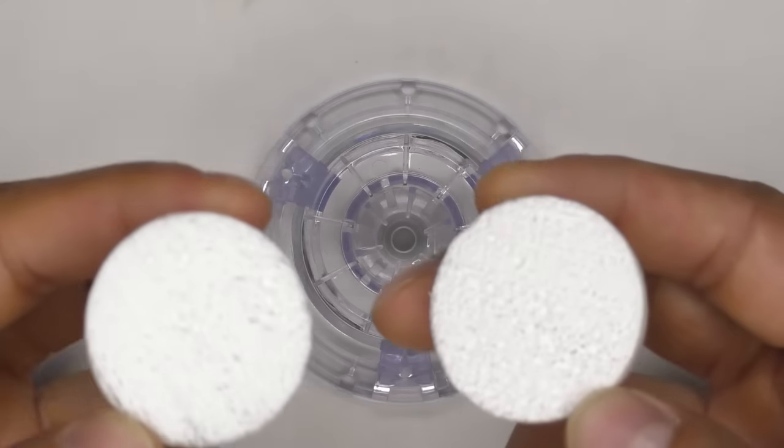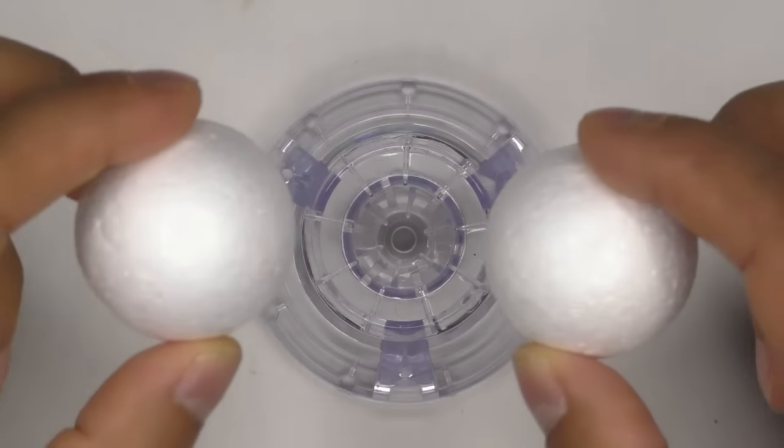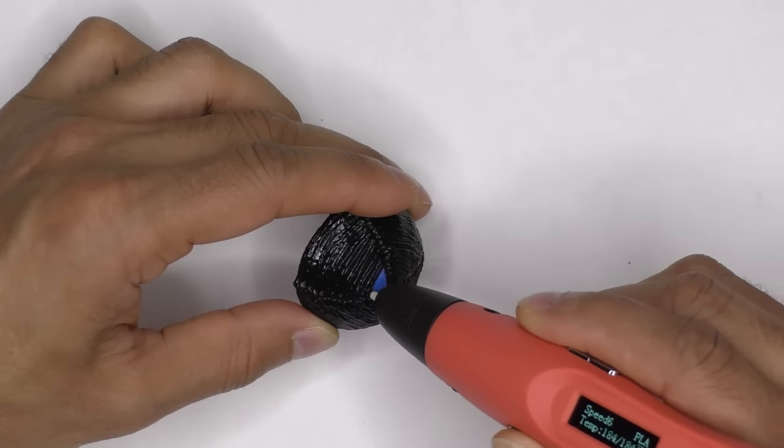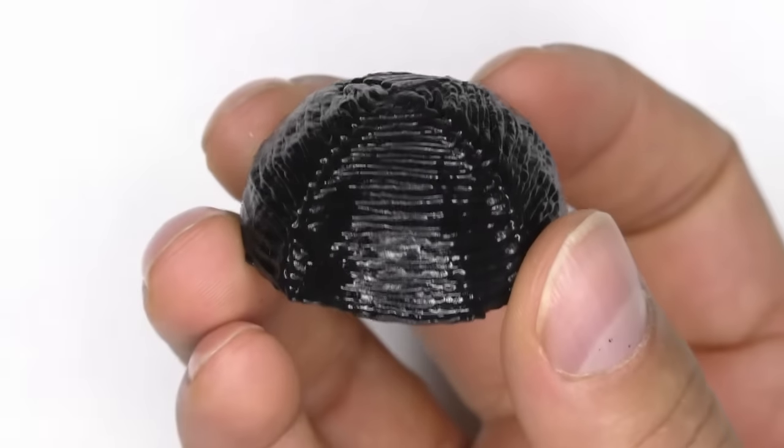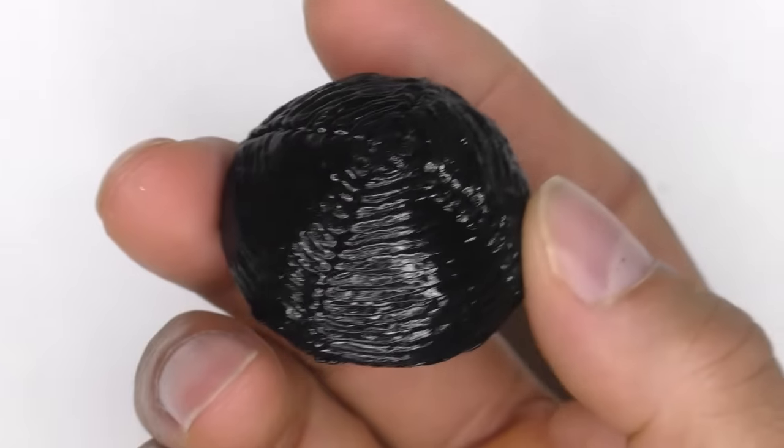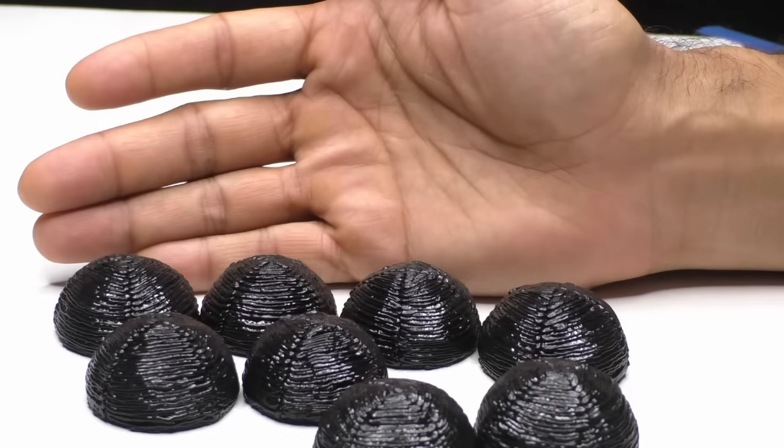The way I'm going to compare things is pretty simple. I'm going to take these half sphere styrofoam balls and coat them all with a single 3D pen layer of the same black filament. So all the methods will have the same starting point of these coated half spheres, which will let me try different things and compare the results.